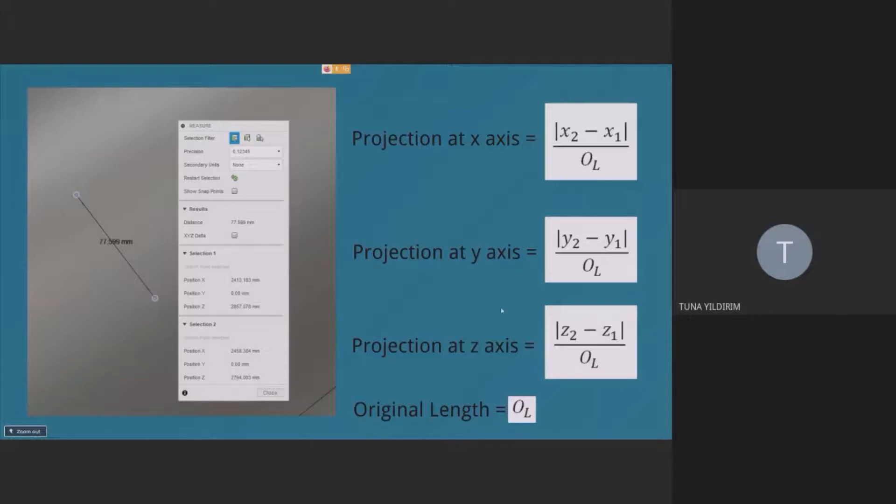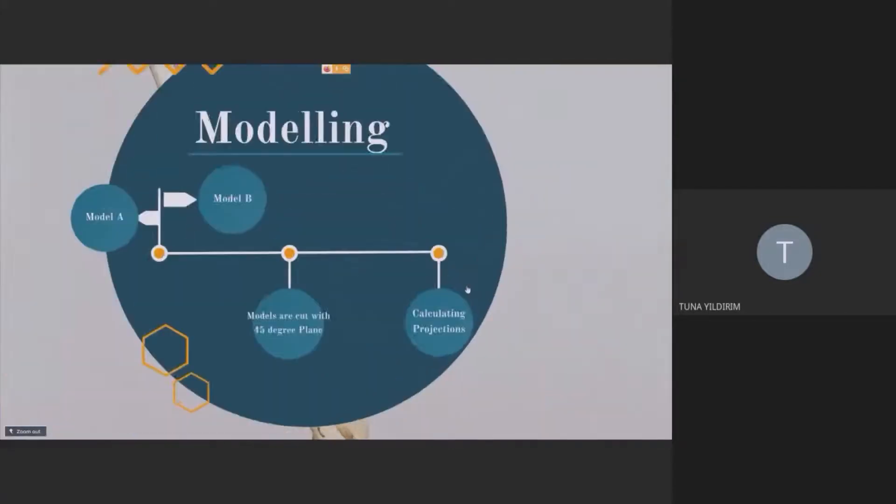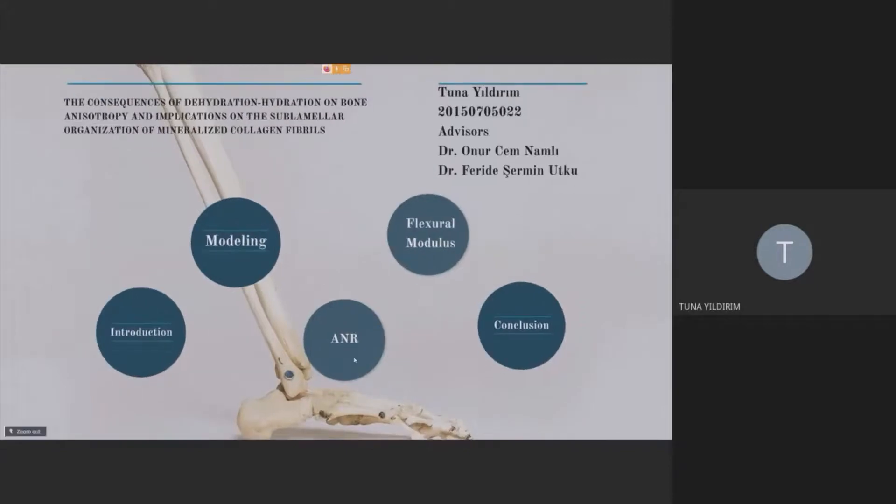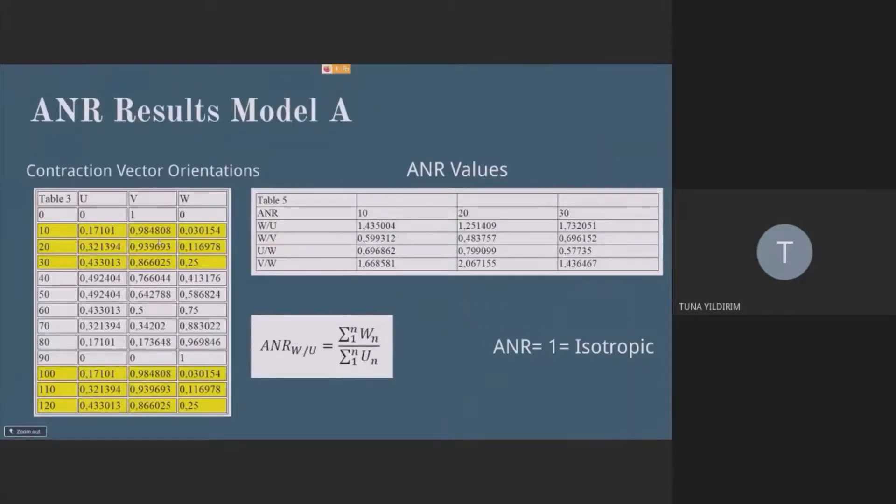My original length is 100 mm. And from this point on, I'll give you details about the results. For model A, like I said, the first three sublamellas are the same with the last three. So their contraction vector orientations are the same.